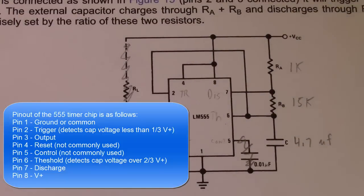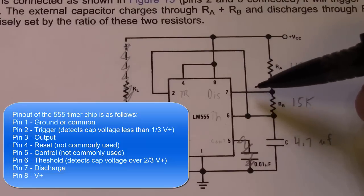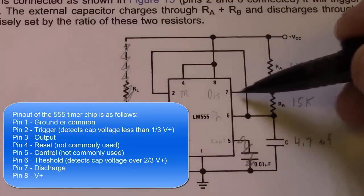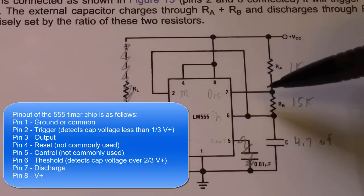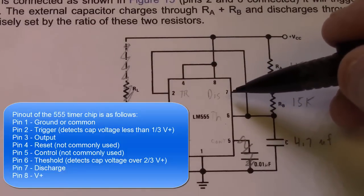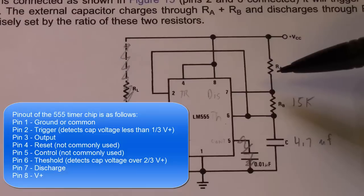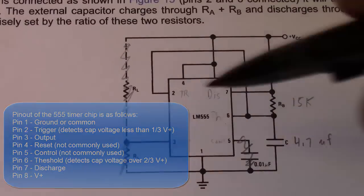Pin seven is our discharge, and this is actually the point in the circuit that is brought periodically to ground. It allows the capacitor to discharge and also charge. When pin seven is grounded, the capacitor is discharging. When pin seven is open and not grounded, the capacitor can charge. This is how the chip works - just periodically charges and discharges the capacitor.